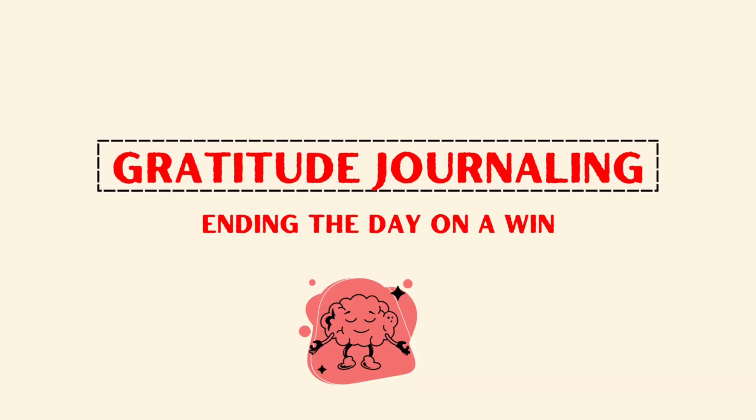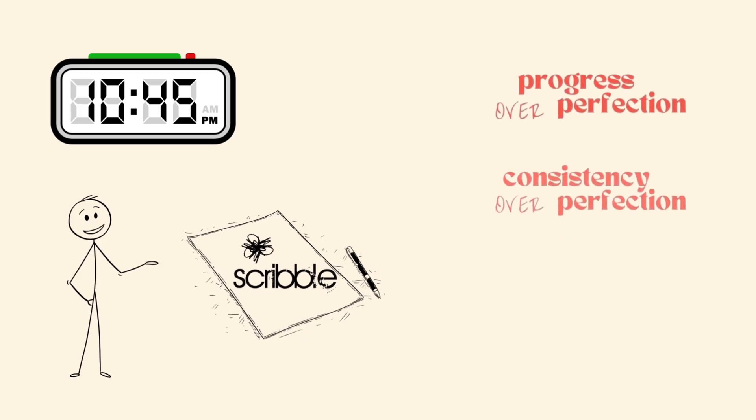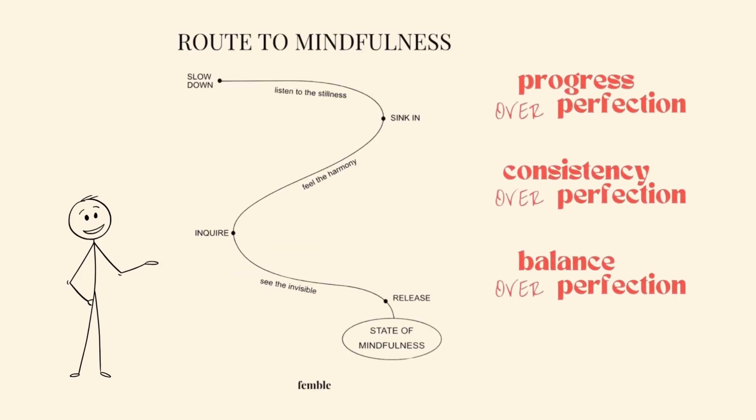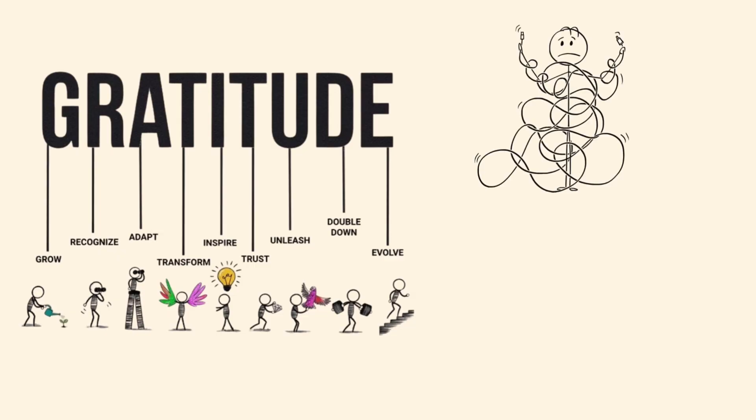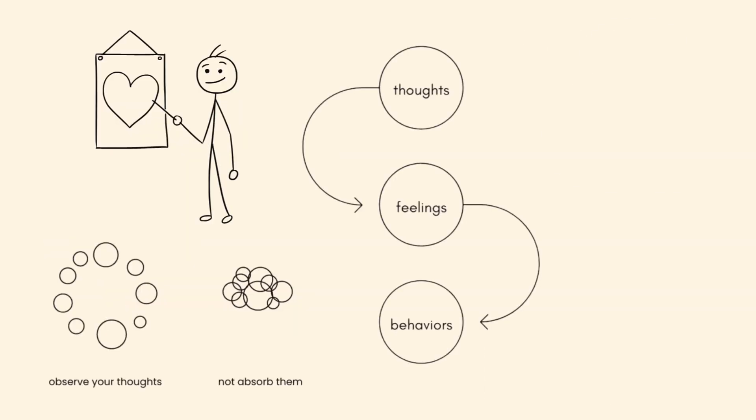Gratitude journaling. Ending the day on a win. At 10.45 p.m., Ethan scribbles down three things he's grateful for. Small or big. Gratitude shifts his brain from scanning for problems to noticing wins. A simple but powerful upgrade.